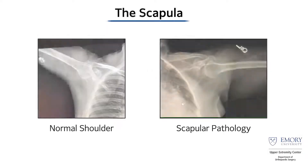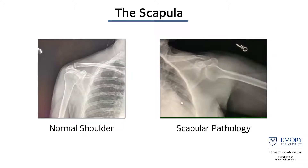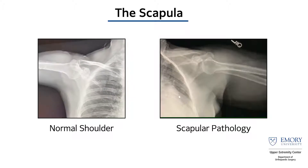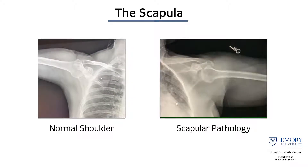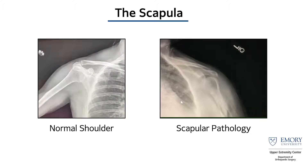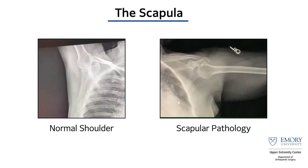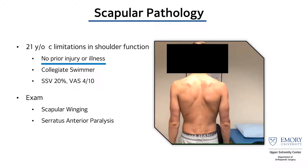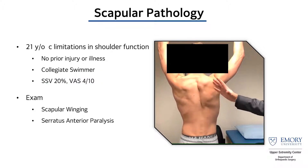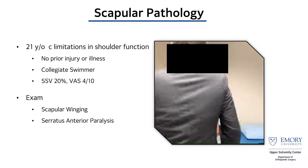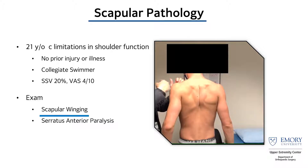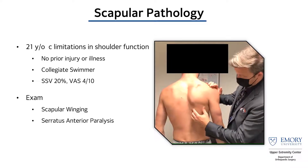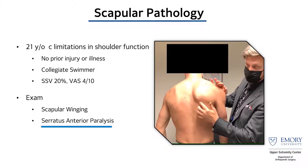Scapular pathology is one of the more fascinating aspects of this technology. On a normal shoulder you can see the scapula externally rotating around the body, contributing significantly to overall shoulder motion. In a patient with serratus anterior palsy, there is very little scapular motion despite the patient having basically full glenohumeral motion — their scapula is essentially paralyzed. Here's another example: a 21-year-old collegiate swimmer with limited shoulder function, no prior injury, who woke up one day unable to move his shoulder. Examination shows scapular winging and no serratus anterior function — no ability to hold the scapula against the chest wall.